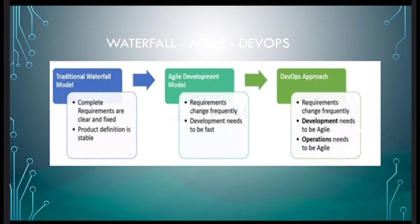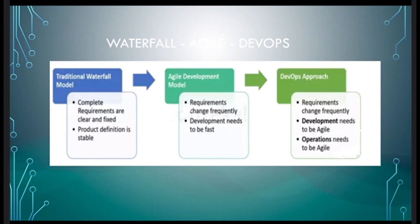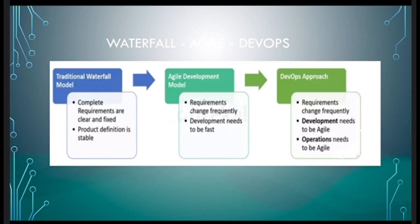Let me start with the waterfall model. In the waterfall model, let's say work is allocated and on a scale of zero to 100 percent, your work is done around 95 percent. Then your project manager or client says to change a particular feature. All the work done up to 95 percent goes to waste and you need to start from scratch. That is the main drawback of the waterfall model.